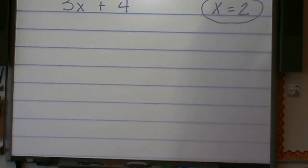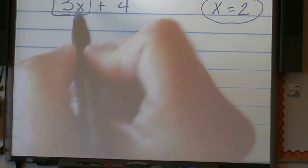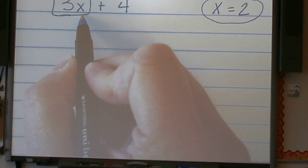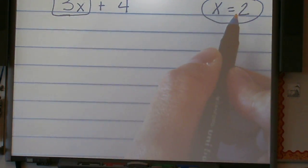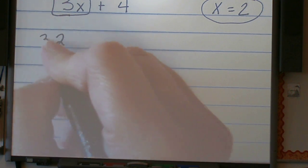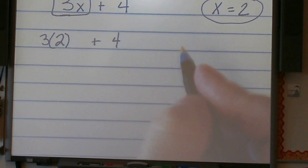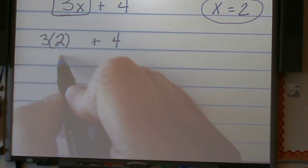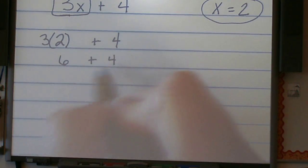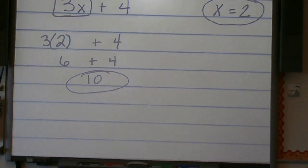If I know that x is 2, and I see that I have 3 times x because I have a coefficient and a variable, my coefficient is multiplied by my variable, I'm going to plug 2 in for this x. So really what I have is 3 times 2 plus 4. 3 times 2 is 6, and 6 plus 4 is 10. So I've now evaluated this expression.